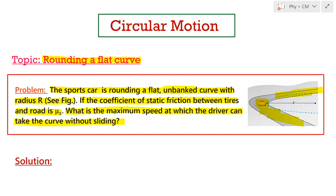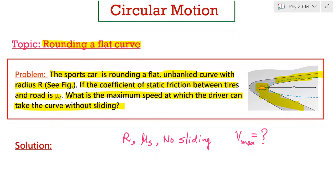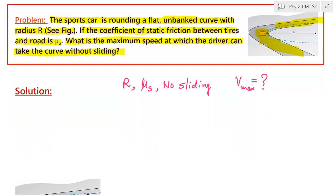So what is given? We have been given the radius of the curve r, the static coefficient of friction μs, and the condition of no sliding. Our target variable is the maximum velocity. In uniform circular motion, the acceleration in the radial direction equals v² / r, so to maximize velocity we must also maximize the radial acceleration.